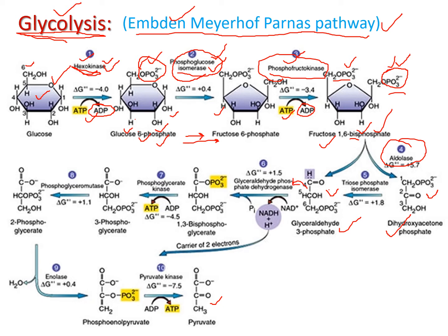Glyceraldehyde-3-phosphate can continue directly to the next step, but dihydroxyacetone phosphate cannot. In step five, the enzyme triose phosphate isomerase converts dihydroxyacetone phosphate into glyceraldehyde-3-phosphate. This is an isomerization reaction — DHAP has a carbonyl functional group while G3P has an aldehyde functional group, making them functional isomers.